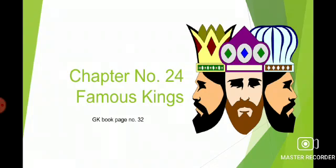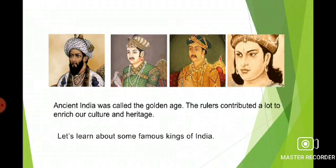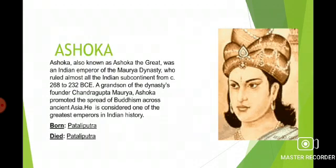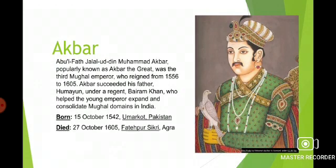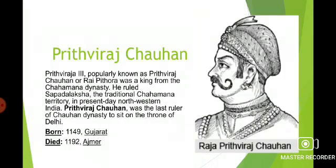Greetings of the day, my dear children. In today's GK class we'll go through Chapter 24, Famous Kings, which is on book page number 32. In the previous lesson we gave you information about the golden age of India — how the rulers contributed and which states of the country did they rule. We gave you information about various kings: Prithviraj Chauhan, Akbar, Altamash, and Shah Jahan.